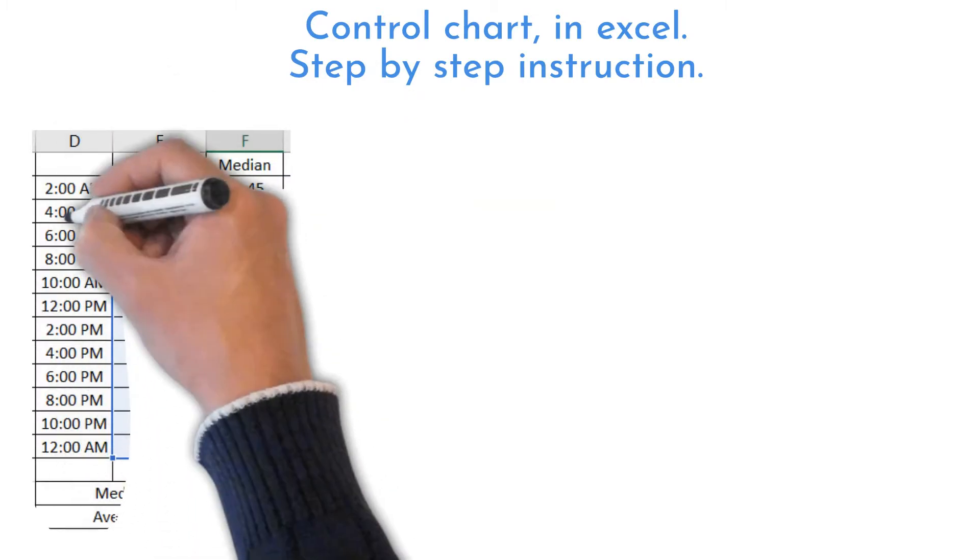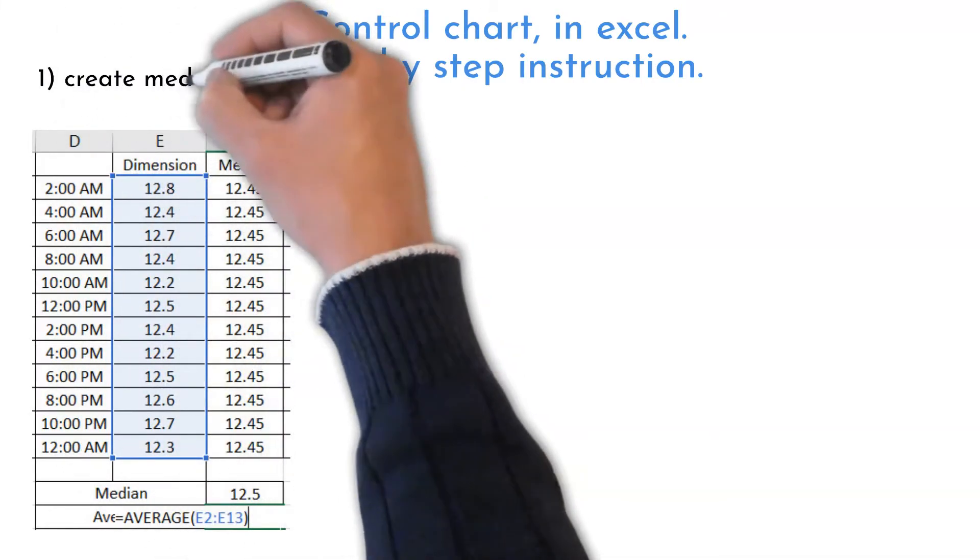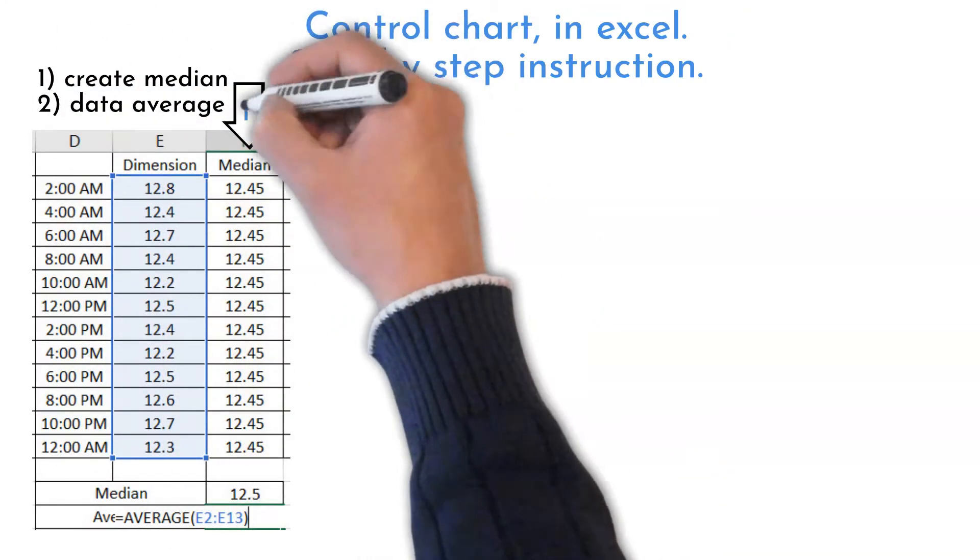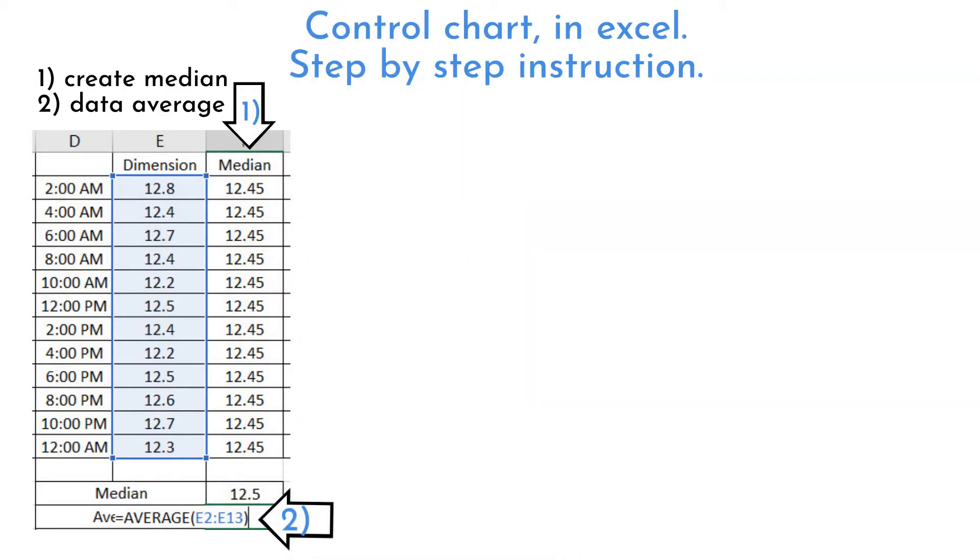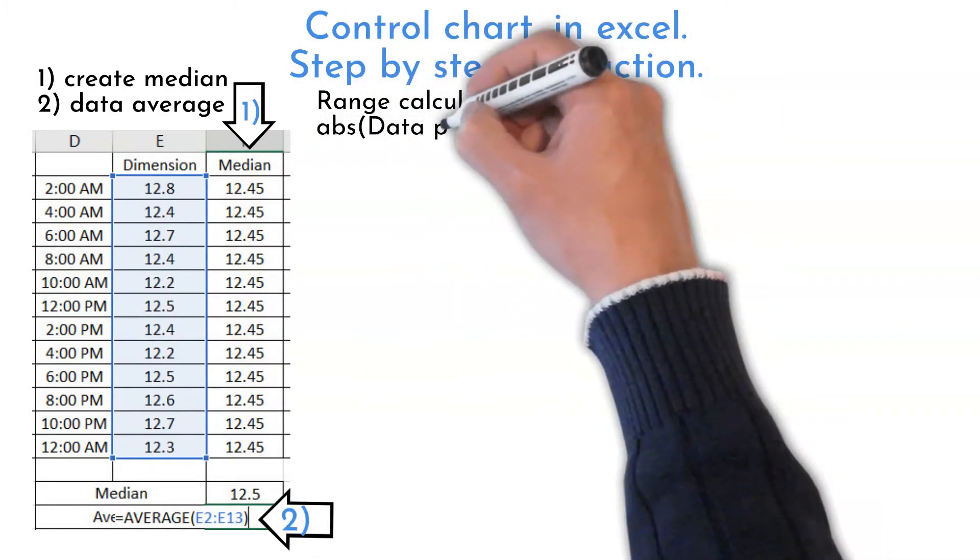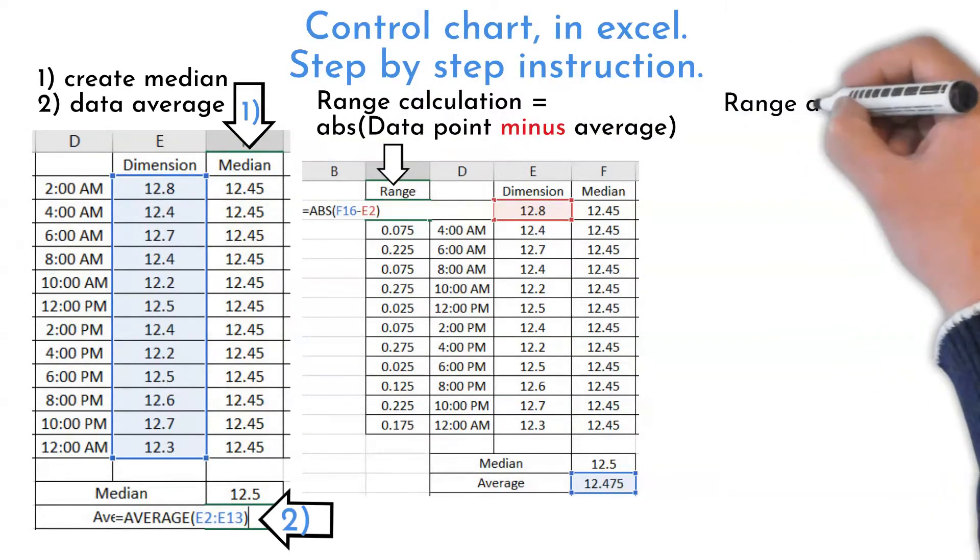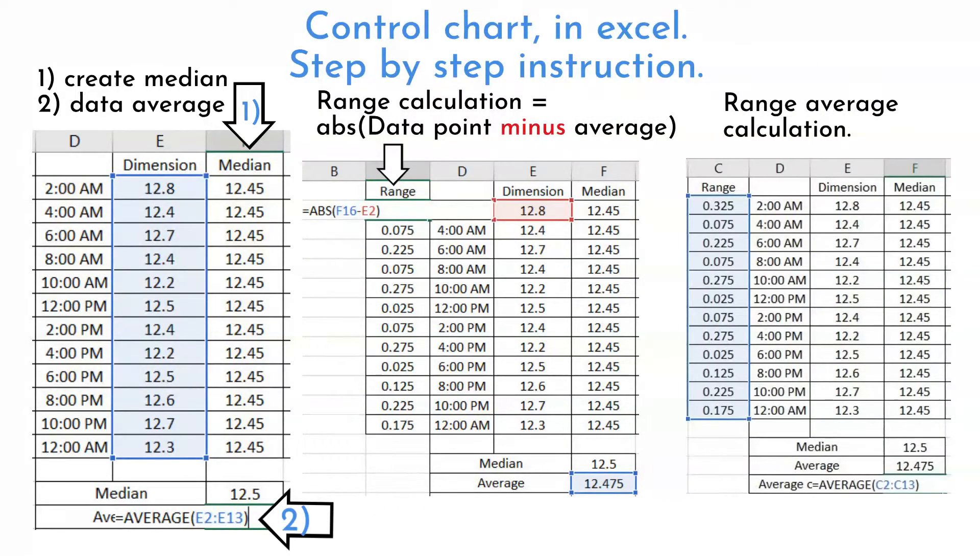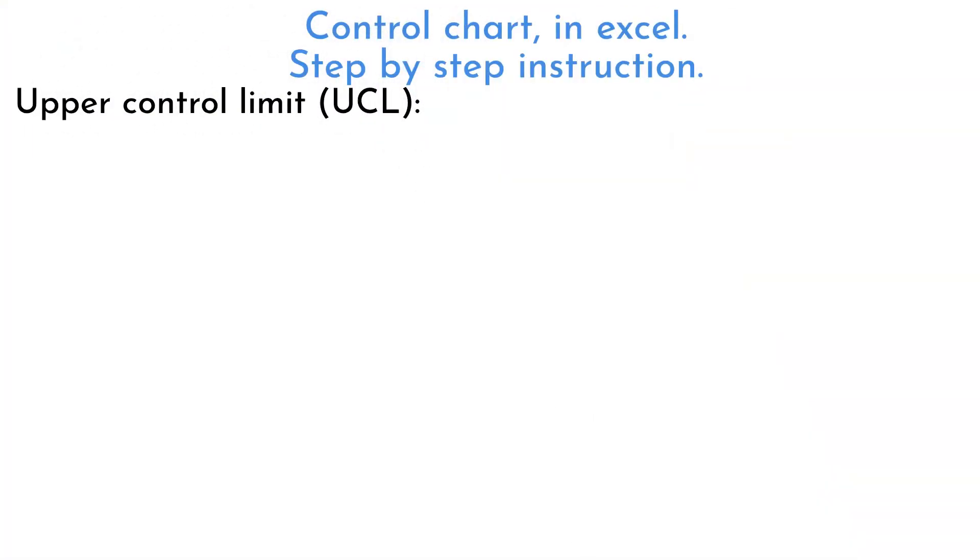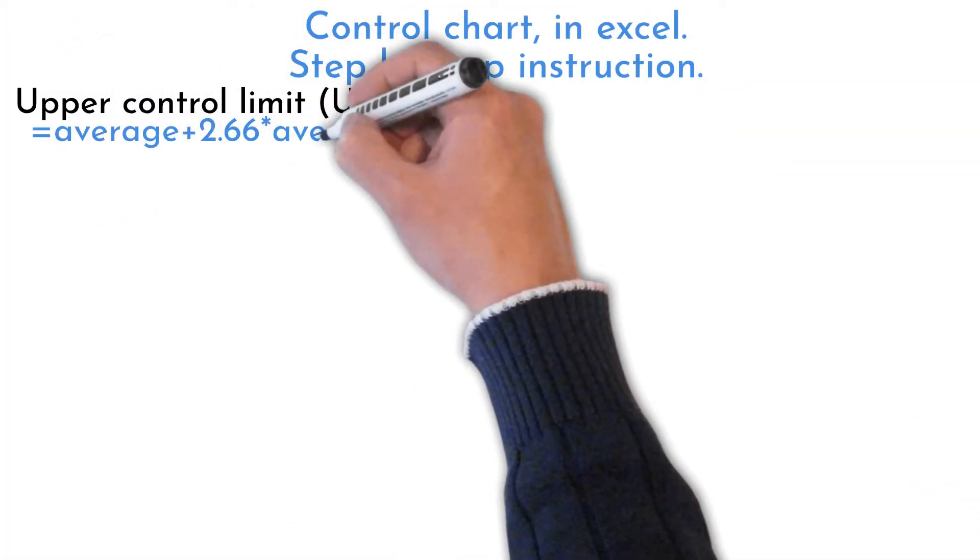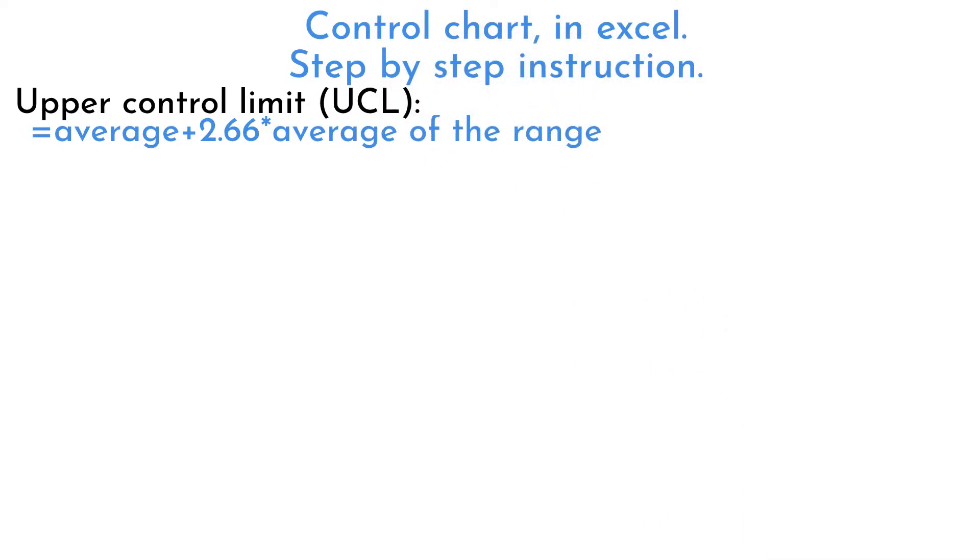As mentioned earlier, control chart is run chart with control limits. To have right results, average of data points needs to be calculated. We subtract each data point from the average. This is called range. We must calculate range average to calculate control limits. Formula for upper control limit is average plus 2.66 times average of the range.